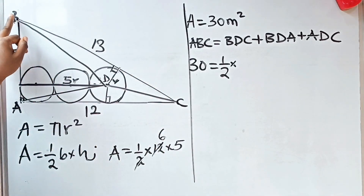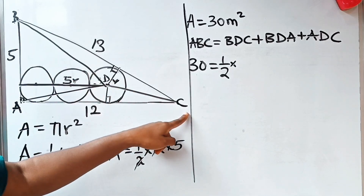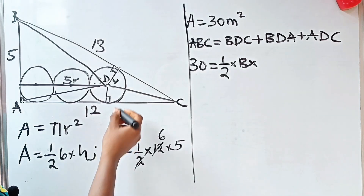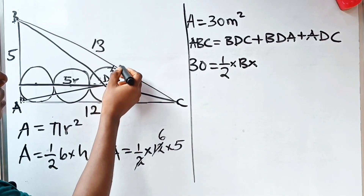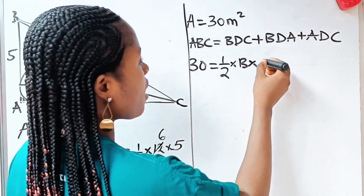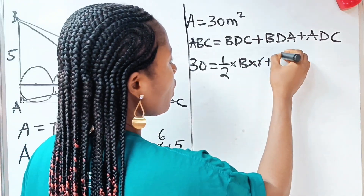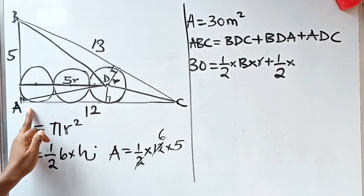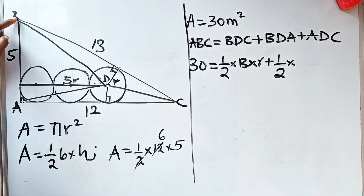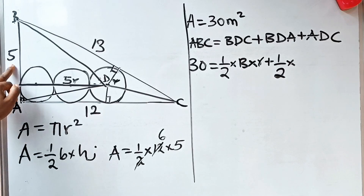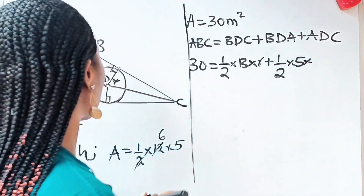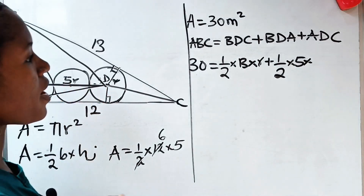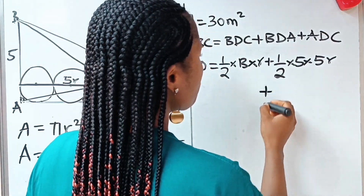For triangle BDC, we have half times base 13 times height R. For triangle BDA, we have half times base 5 times height 5R. And for triangle ADC, we have half times base 12 times height R.